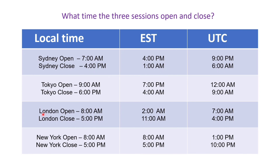For example, if you look at this chart, London opens at 8 a.m. and closes at 5 p.m. local time, opens at 2 a.m. and closes at 11 a.m. eastern time, and opens at 7 a.m. and closes at 4 p.m. universal time coordinate.